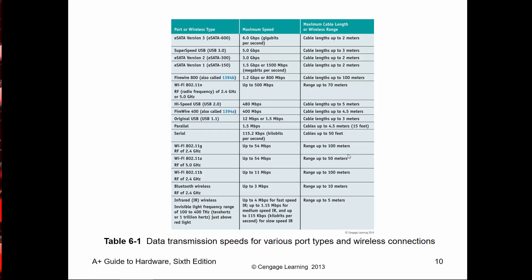You want to know the speeds of common interfaces. For example, FireWire 800 runs at 800 megabits per second and can reach up to 100 meters.